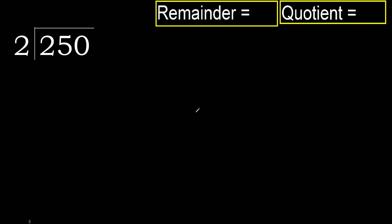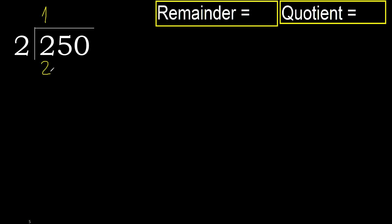250 divided by 2. 2 is not less, therefore work with 2. 2 multiplied by which number is nearest to 2 but not greater? 2 multiplied by 2 is 4 — 4 is greater. 2 multiplied by 1 is 2 — is not greater. Subtract 0, eliminate 0 on this side.